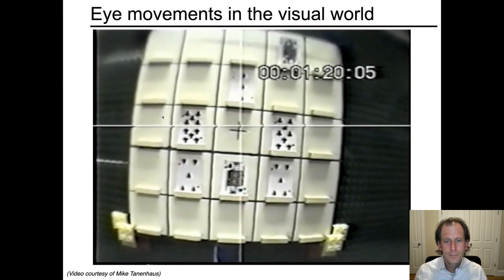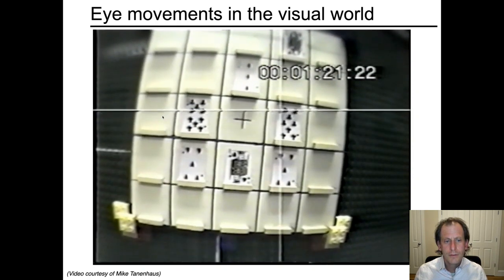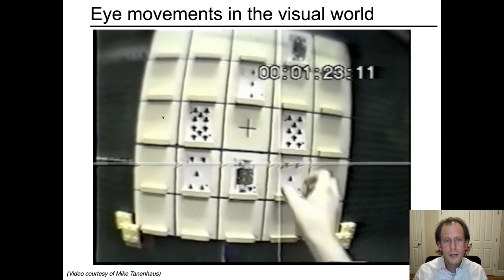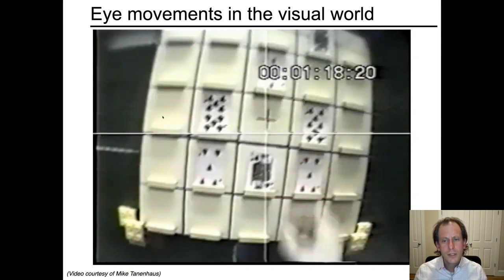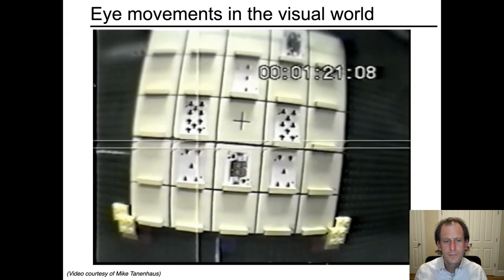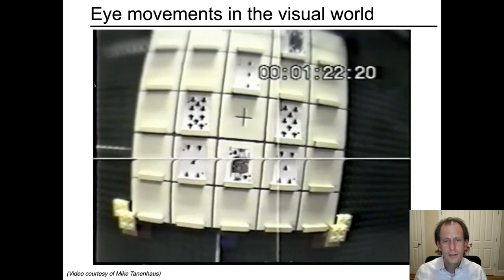Now put the five of hearts that is below the eight of clubs above the three of diamonds. Let's do that one more time, and once again watch the exact timing of when the eye movement from this card to this card starts. It's very, very fast.